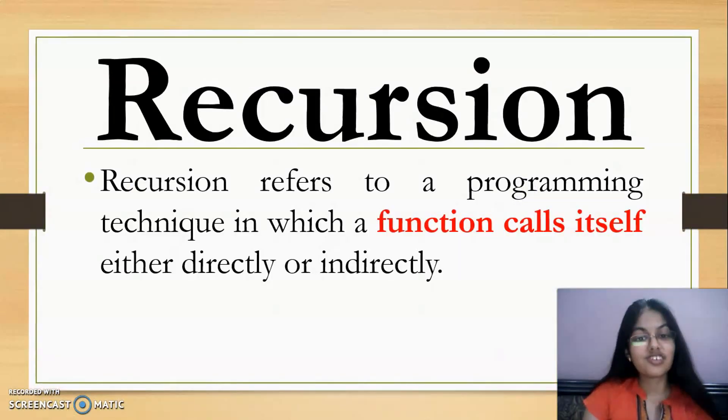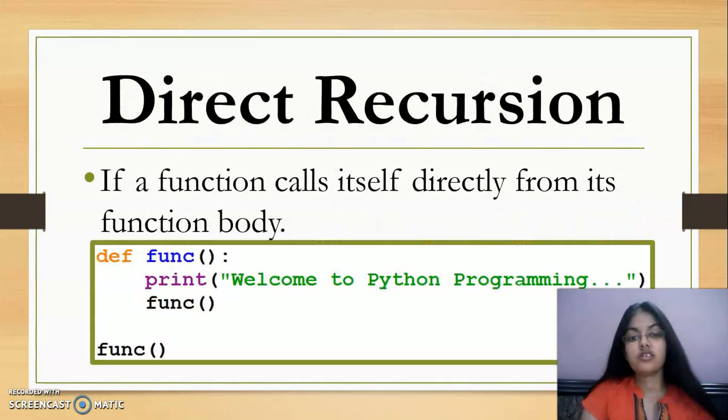What is recursion? Recursion is a process or technique whenever a function calls itself again and again. When a function calls itself or another function, that process is called recursion. Recursion can be direct recursion or indirect recursion.